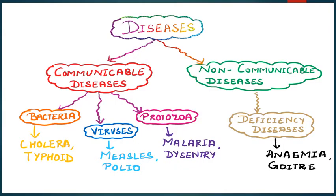Diseases can be of two major types: communicable diseases and non-communicable diseases. Communicable diseases can be of three types depending upon their causing agent — bacterial disease, viral disease, or protozoan disease. Non-communicable diseases are majorly the deficiency diseases. We will study about each type in detail.